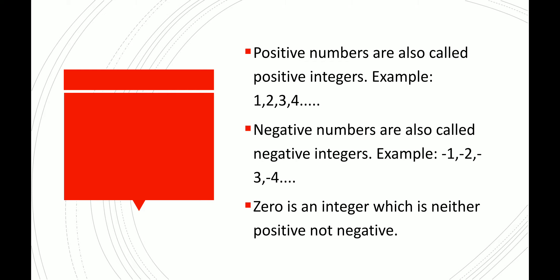These numbers are on the right side of zero on the number line. Now, come to negative integers. Negative numbers on the number line to the left of zero are called negative integers. For example, minus 1, minus 2, minus 3, and so on. If we take zero, zero is an integer but it is neither a positive number nor a negative integer.